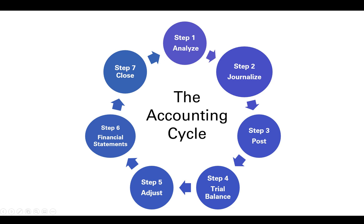The accounting cycle is how a company records all of the things that happen — all the financial transactions — and eventually we're going to go through all of these steps and come out with financial statements, which is what companies use to report their results to other companies and entities and people.